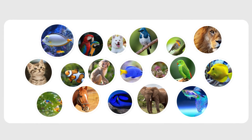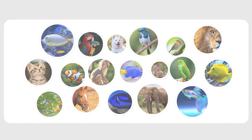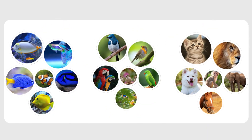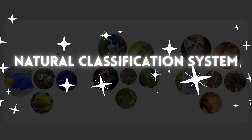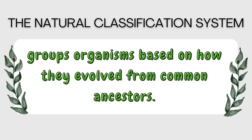Scientists classify living organisms into groups to make it easier to study them and understand how they are related. The system of classification that we use today is called a natural classification system. This system does not only look at how organisms look on the outside, like older systems did, but also tries to reflect evolutionary relationships — meaning it groups organisms based on how they evolved from common ancestors.